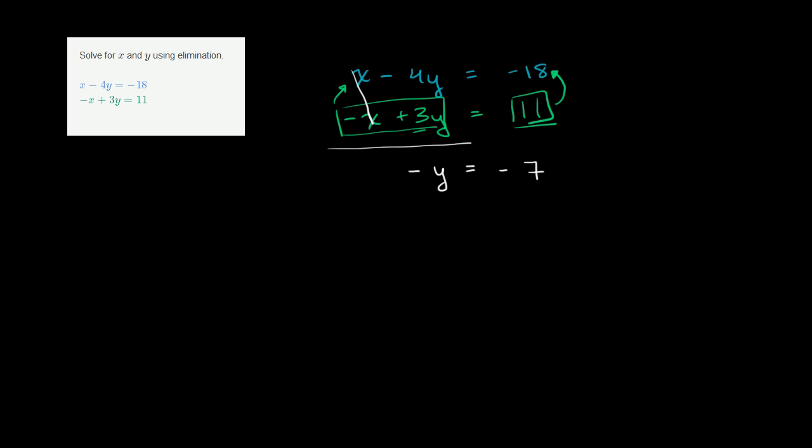And now we're in the home stretch. If we want to solve for y, we can divide both sides by negative 1, or multiply both sides by negative 1, depending on how you want to view it. So let's divide both sides by negative 1. We are left with y is equal to positive 7.